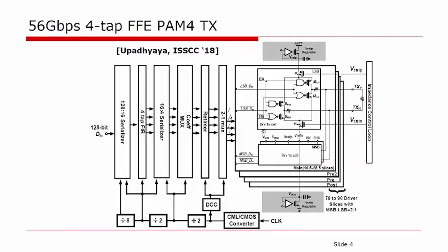The four-tap FFE PAM4 TX takes parallel data input and serializes it into four bit streams. Each bit stream is associated with each tap of the FFE. For each tap, we allocate a certain number of PAM4 voltage mode driver slices, the number depending on the FFE coefficient. The signals from each tap are then summed up in the analog domain, in this case at the transmitter pad.